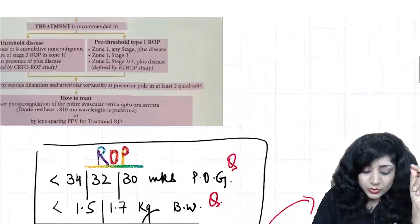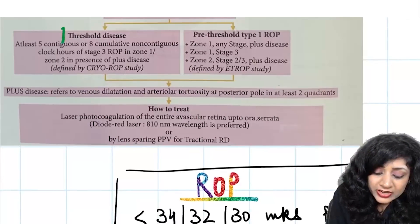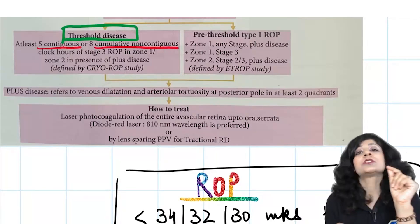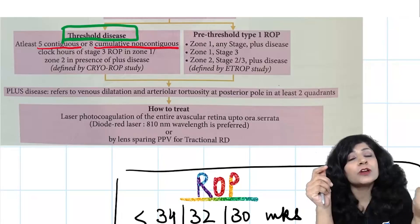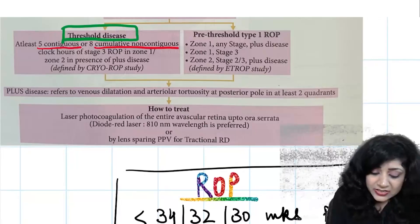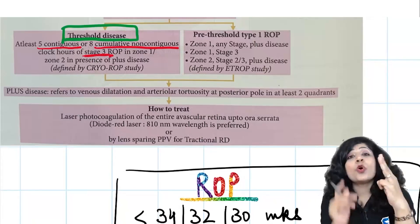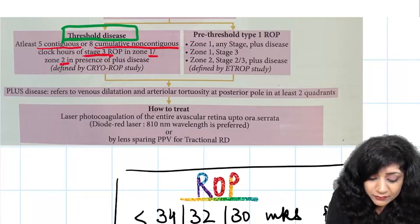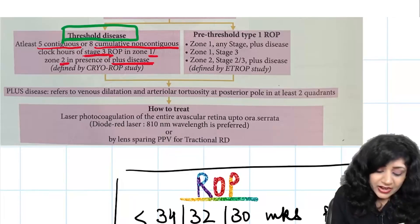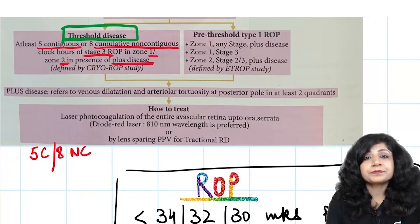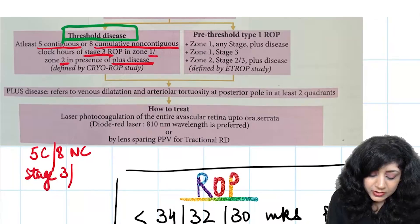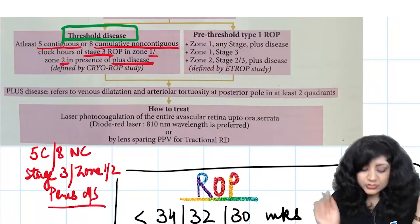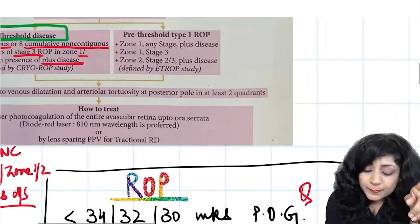What is threshold? For threshold disease, you take either 5 contiguous or 8 cumulative non-contiguous clock hours. Either 5 should be contiguous or 8 should be non-contiguous, then take a severe stage. In stage 3, zones are severe which are nearer to center - zone 1 or zone 2. Along with this, we also have plus disease. So: 5 contiguous, 8 non-contiguous, with stage 3, zone 1 or 2, and plus disease. This is your threshold.